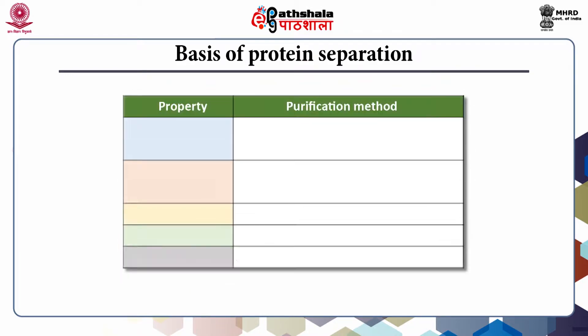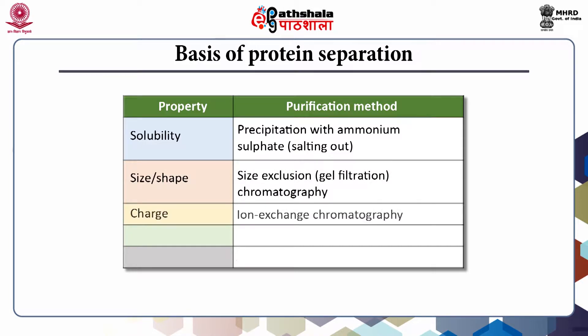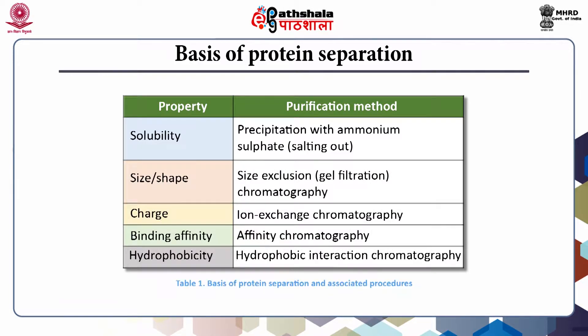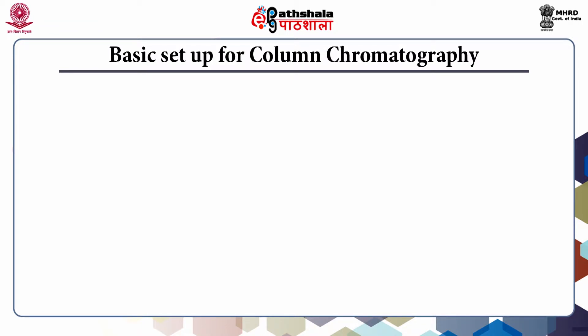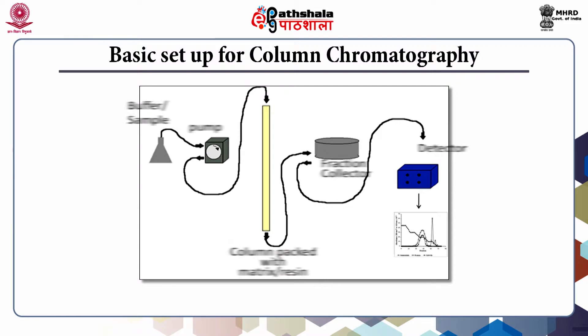Proteins can be separated on the basis of solubility, size, charge, binding affinity, and hydrophobicity. Usually protein mixtures are subjected to a series of separations, each based on a different property, to yield a pure protein. Chromatographic separation of protein mixtures are among the most effective and widely used means of purifying individual proteins. Some of the most commonly used methods, along with the property on which separation is carried out, are shown in this table.